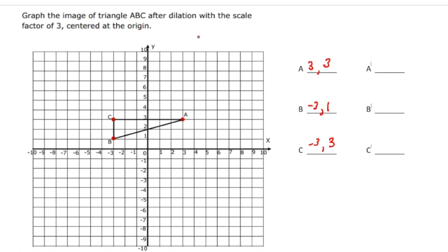We're going to create a dilation with a scale factor of 3, so we multiply each one of these x and y values by 3. So 3 times 3 is 9, and 3 times 3 is 9. Negative 3 times 3 is negative 9. 1 times 3 is 3. And for C: negative 3 times 3 is negative 9, and positive 3 times 3 is positive 9.